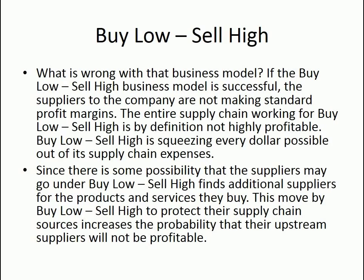What is wrong with that business model? If the buy low and sell high business model is successful, the suppliers to the company are not making standard profit margins. The entire supply chain working for buy low and sell high is by definition not highly profitable. Buy low and sell high is squeezing every dollar possible out of its supply chain expenses. Since there is some possibility that suppliers may go under, buy low and sell high finds additional suppliers, which increases the probability that their upstream suppliers will not be profitable.